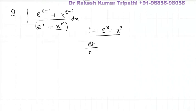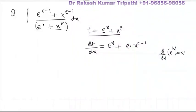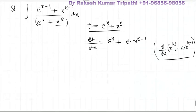On differentiating t with respect to x: left side is dt/dx, right side is derivative of e^x plus derivative of x^e which is e·x^(e-1). This is because d/dx of x^k for any constant k is k·x^(k-1) — when the power is constant, differentiation works this way.